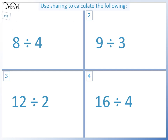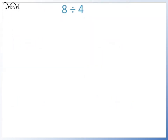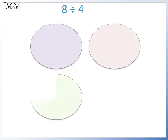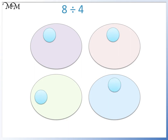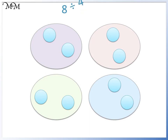Question one: eight divided by four. We are dividing by four, so we draw four circles. We want to share eight, so we draw counters until we reach eight: one, two, three, four, five, six, seven, eight. There are two counters in each circle, so eight divided by four equals two.